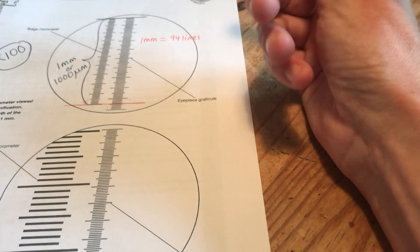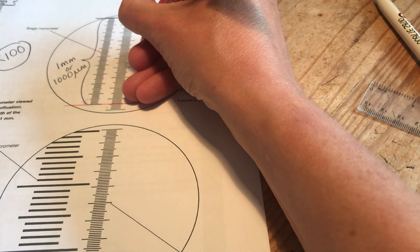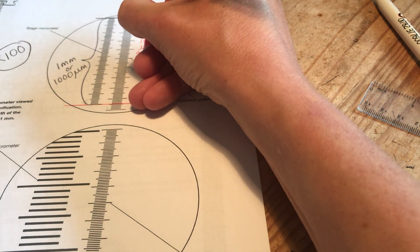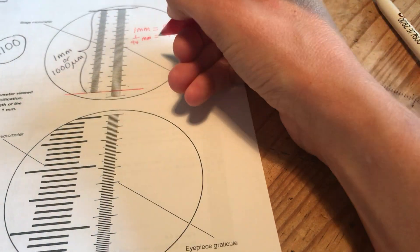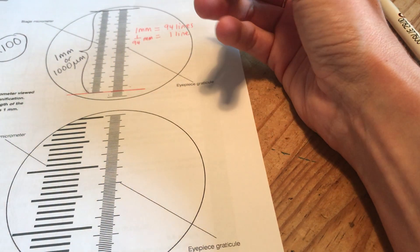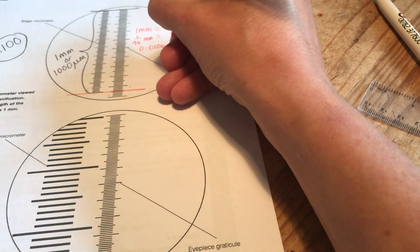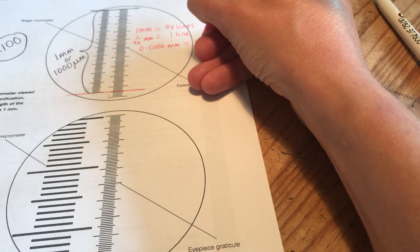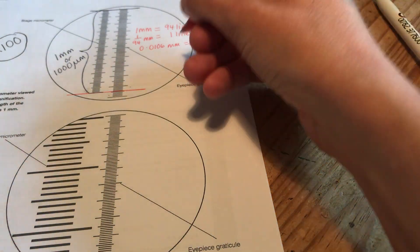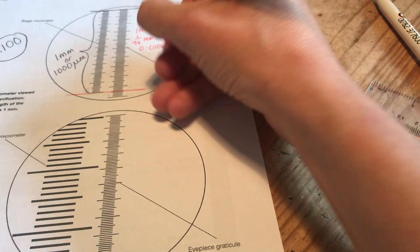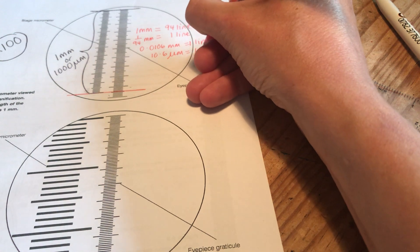Now my job is to work out how much one line is worth in millimeters. So 1 over 94 of a millimeter is worth one line. So if I do 1 over 94 I get 0.0106 millimeters equal to one line on the eyepiece graticule. If I convert that into micrometers to make it look a bit tidy, 10.6 micrometers is worth one line.